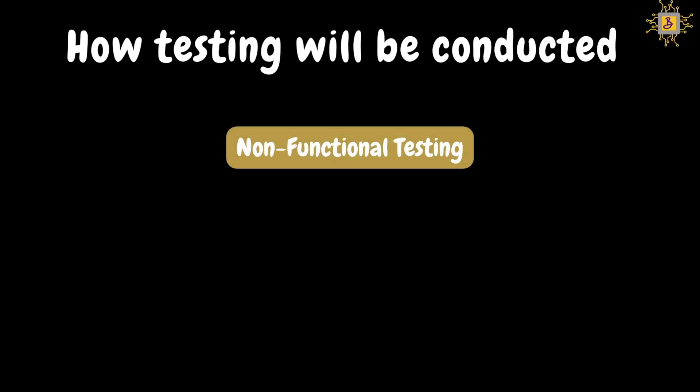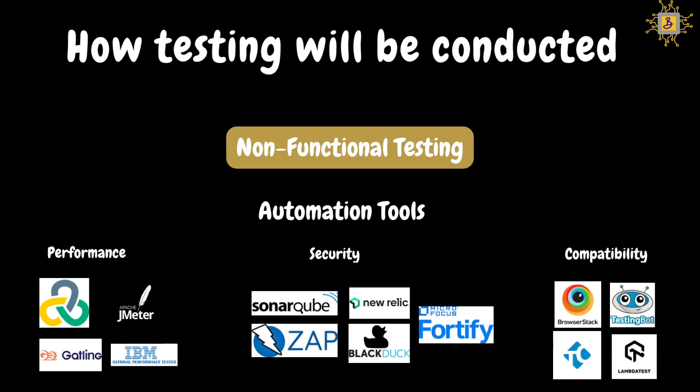Now let's talk about non-functional testing. Except for usability testing, all non-functional testing will be carried out using tools. For performance testing, teams will use LoadRunner, Apache JMeter, Gatling, IBM Rational Performance Tester, etc. For security testing, teams will use SonarQube, Netsparker, Fortify, Black Duck, and OWASP ZAP proxy tools. For compatibility testing, teams will use BrowserStack, TestingBot, LambdaTest, and TestComplete tools. In this series, we will be learning Apache JMeter performance testing tool in module number 6.